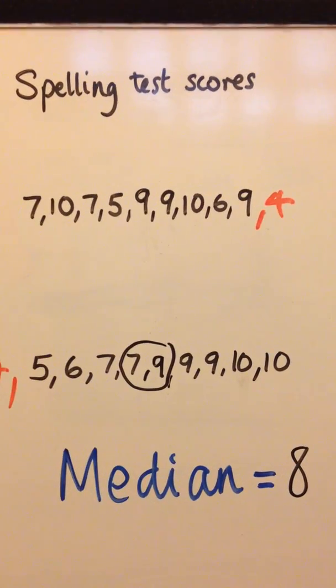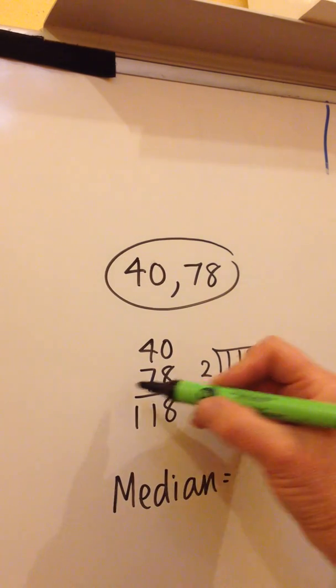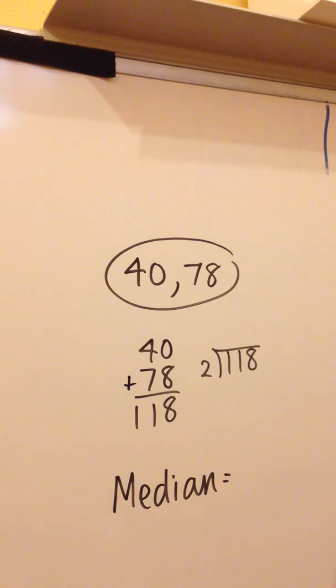It's not always that easy if you've got two values in the middle, for example, which are a long way apart, like 40 and 78. If those were your two middle values, the best way to do that would be to add those two values together to give you 118. And then do a simple bus stop to work out the answer.